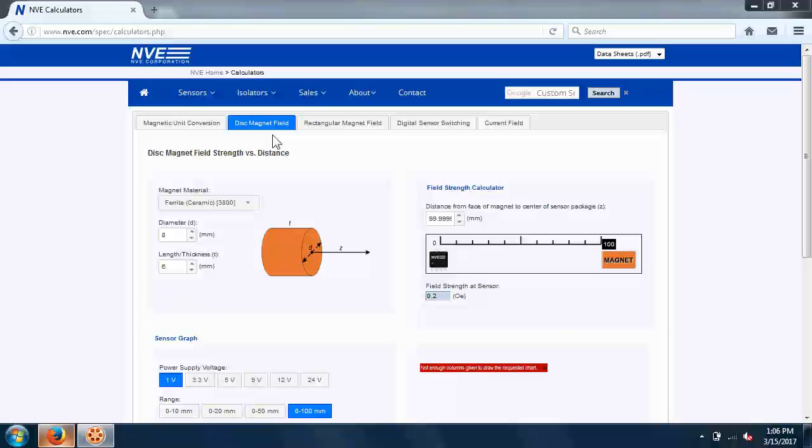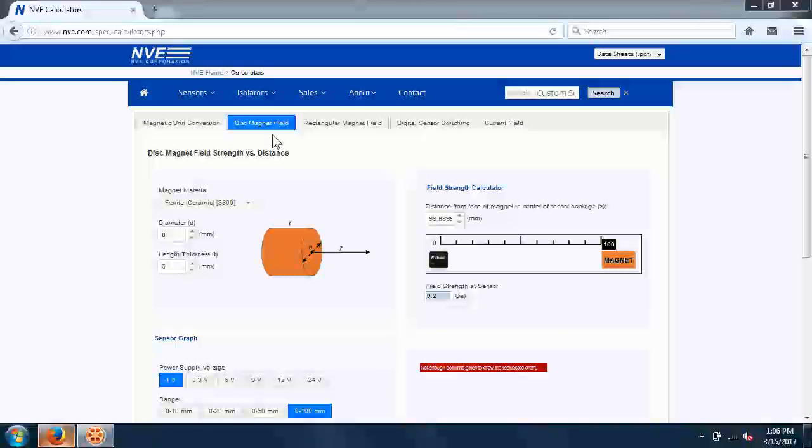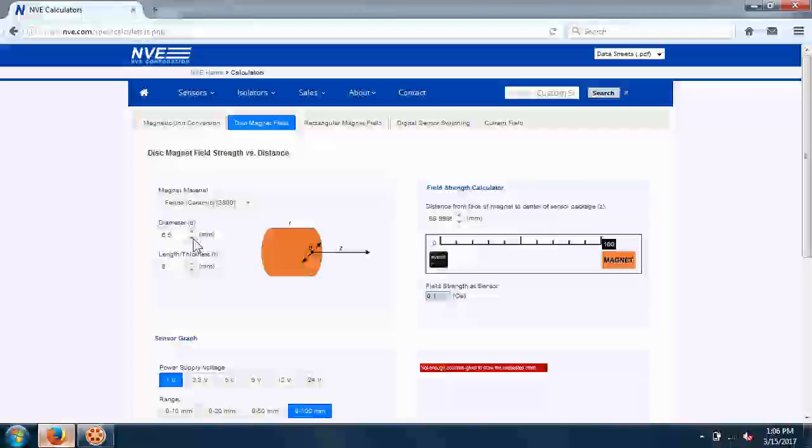The app lets us select the magnet shape, size, and magnet material. So, for example, let's select one of our popular magnets. A 6mm diameter, 4mm thick ferrite magnet.